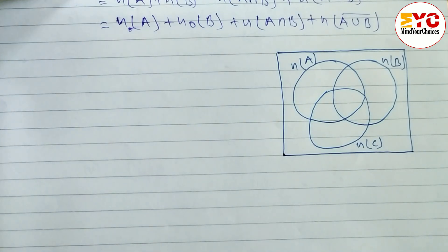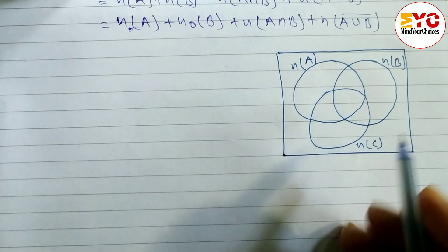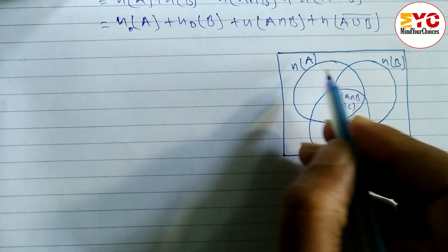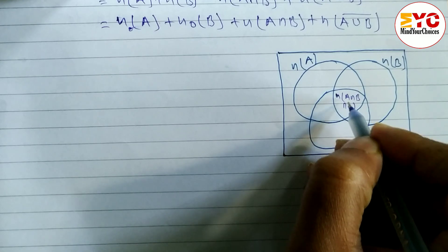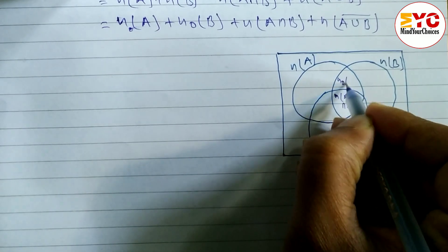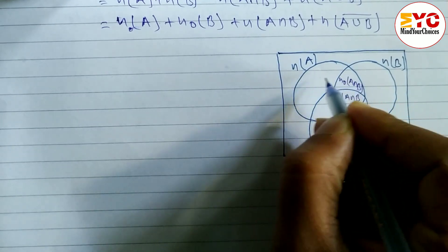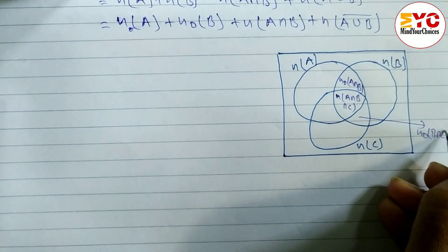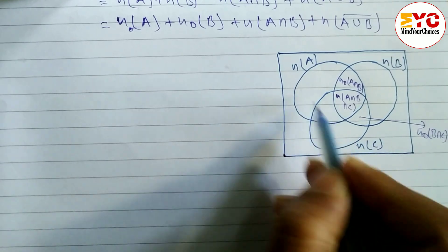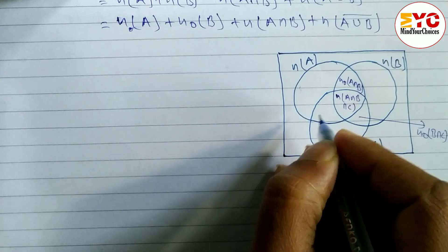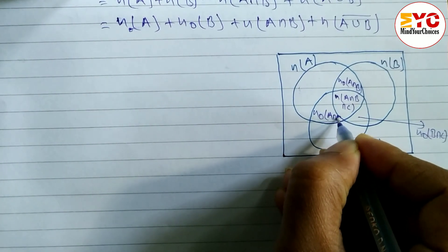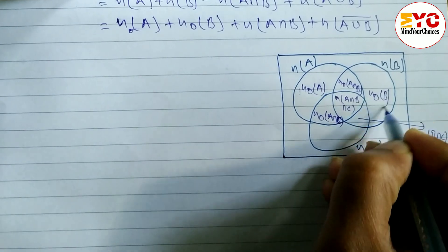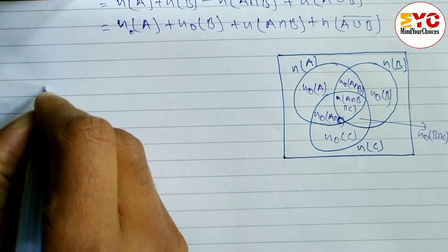You can see here a diagram of three sets A, B, and C. The middle part is known as n(A intersection B intersection C). The part common for A and B only is called n(only A intersection B). The part common in B and C is n(only B intersection C). The part common in A and C is n(only A intersection C). The remaining parts are only A, only B, and only C.